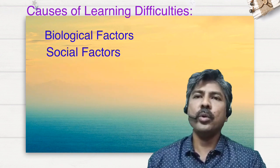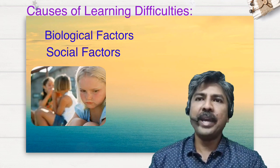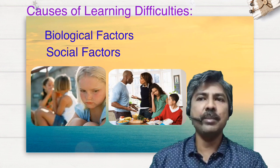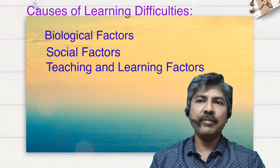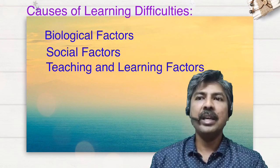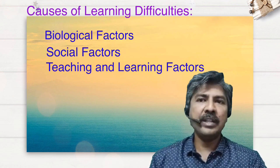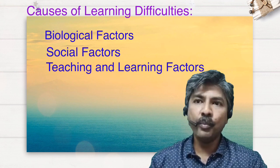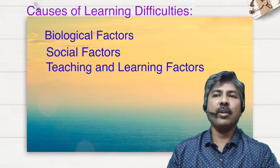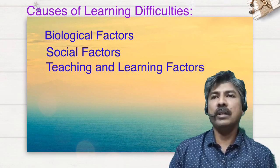Social causes include sibling rivalries, peer conflicts, and family issues like lack of parental support, understanding, or poor parenting, which can also create disturbance in learning. Teaching and learning factors are another cause, where improper methodology adopted for learning and teaching, lack of use of relevant aids in teaching, and lack of opportunities for learning experience and practice can also create problems for the child in terms of learning.